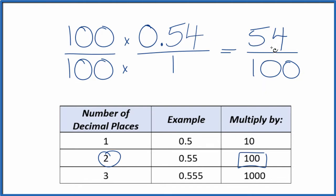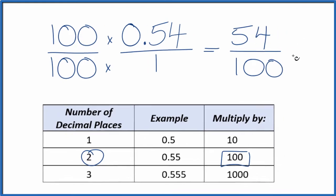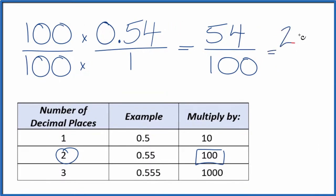But we could reduce this further, because these are both even numbers. If we divide 2 into 54, we get 27. 100 divided by 2, that's 50. So we've simplified 54 over 100 down to 27 over 50. We can't simplify this any further.